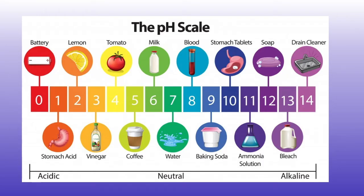This is a pH scale. From left to right, we have a scale of 0 through 14. Starting on the left, we have the colors red, orange, yellow, green, blue, and purple. The closer you are to 0 means you are a strong acid, like batteries, lemons, and stomach acid.